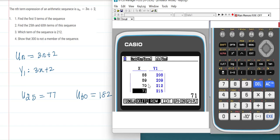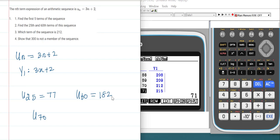212. You can see the 69th term is 209 and 70th term is coming to 212. So the 70th term would be 212.